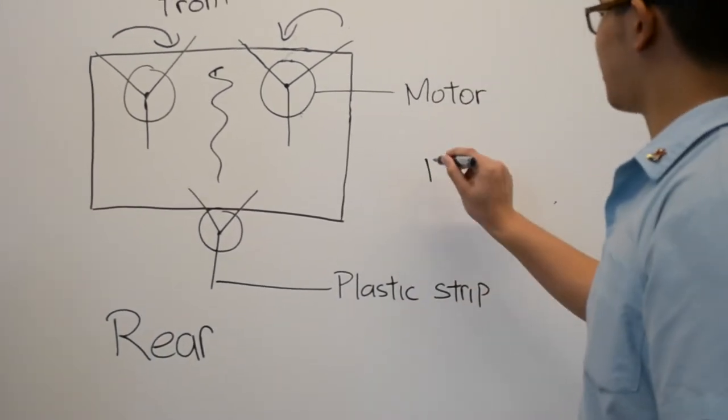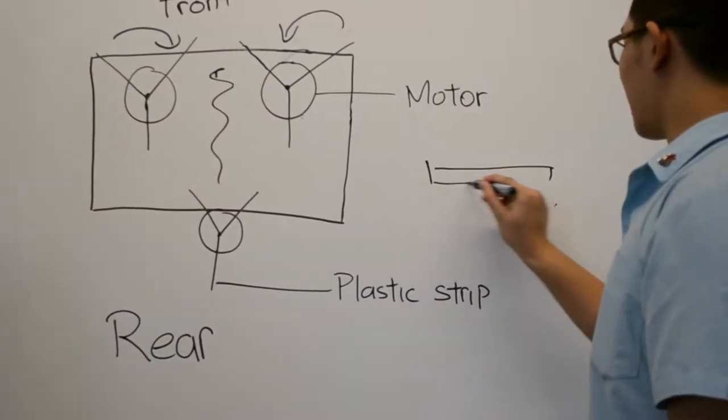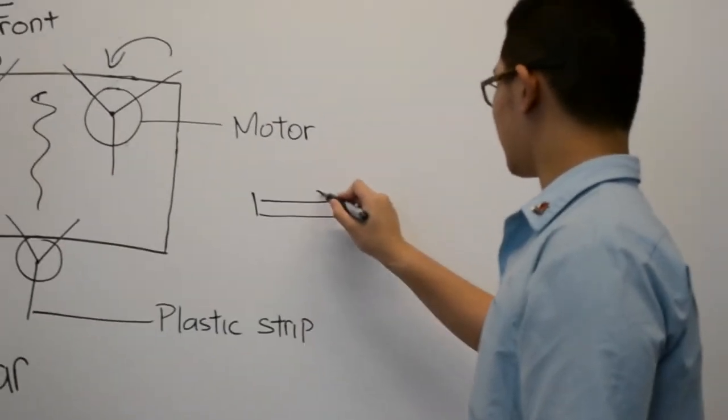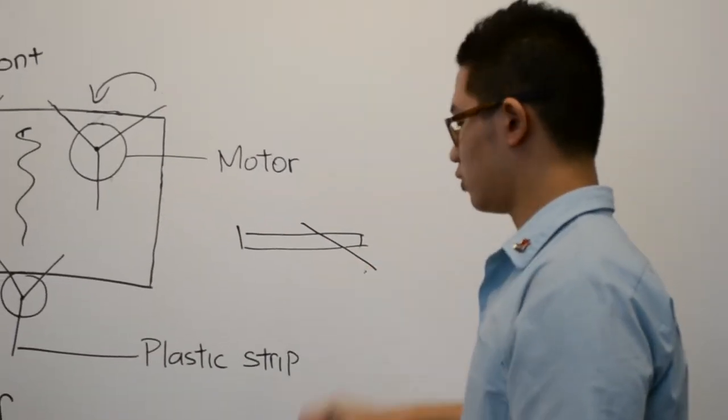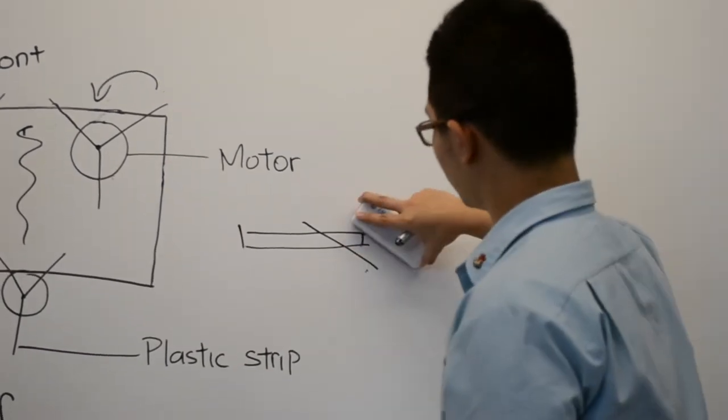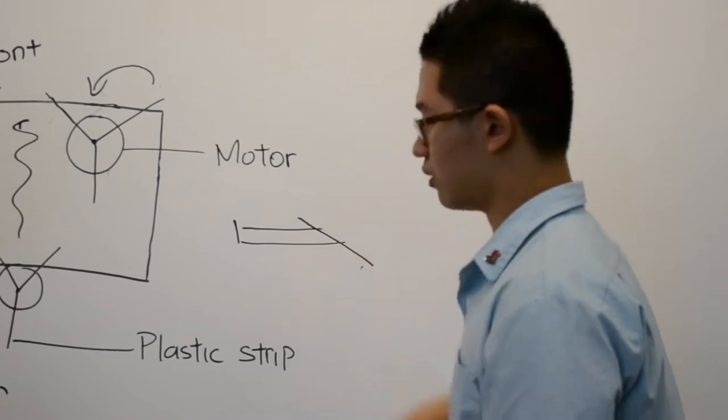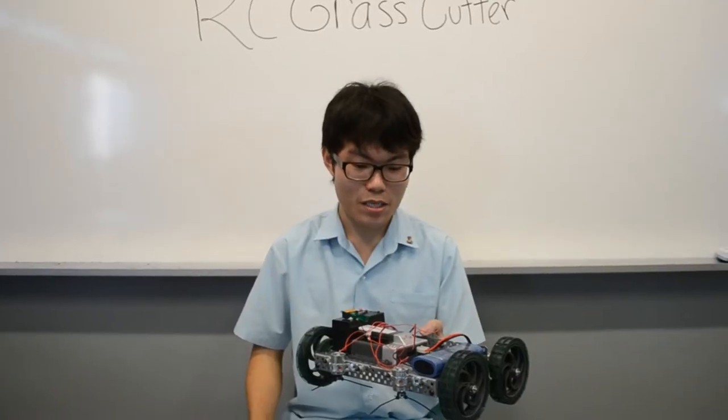Since the plastic strip comes straight from the package, we cut it at a 25 degree angle so that it will be sharper and we can cut the grass more easily. Now I will explain the parts.